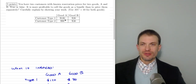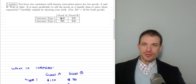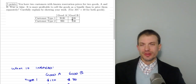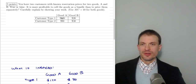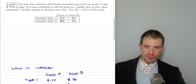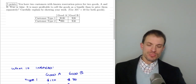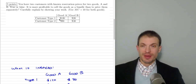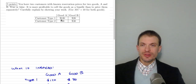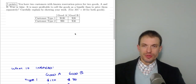The demands are fairly similar in that the willingness to pay for good A are pretty close together, and the willingness to pay for good B are pretty close together. Here's a difference of $10 for good B and a difference of $30 for good A, but those differences are small relative to the size of the willingness to pay for good A. So these are fairly similar demands for both goods.